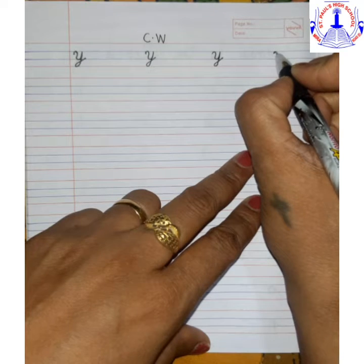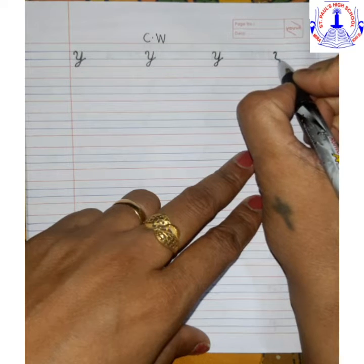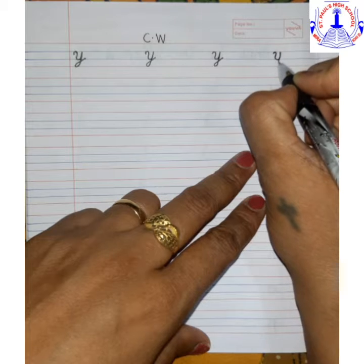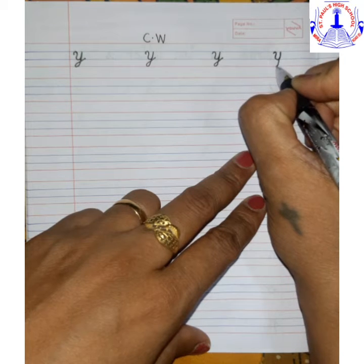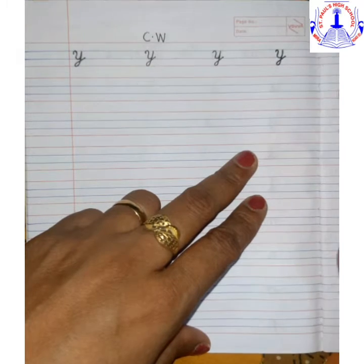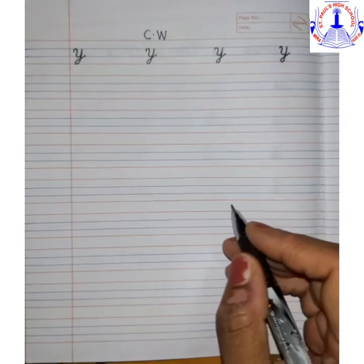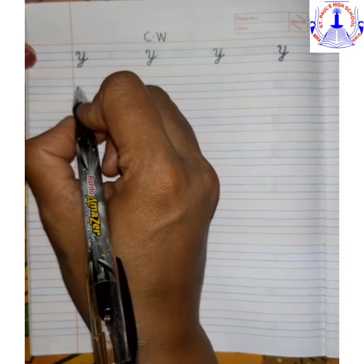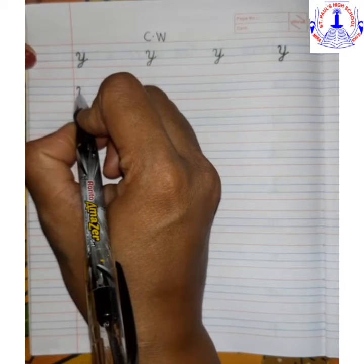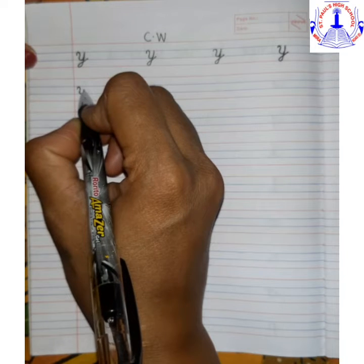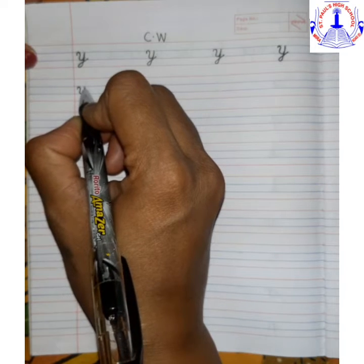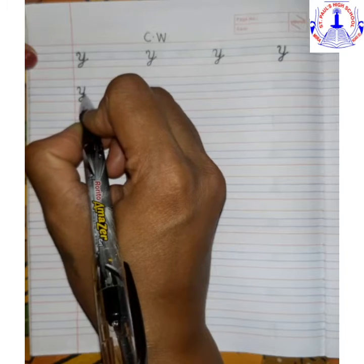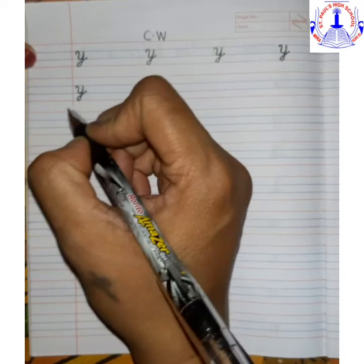Make a curve, go down, go up, then come down. From down you have to make a loop upward — cursive letter Y. Make a curve, go down, then come down. When you touch the red line, you have to make a loop.